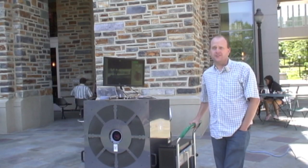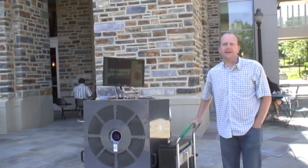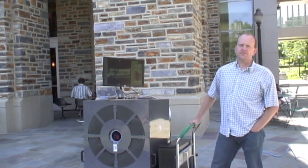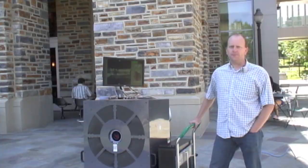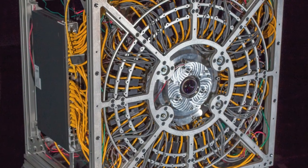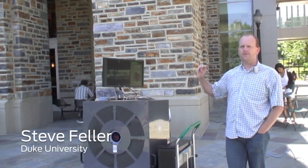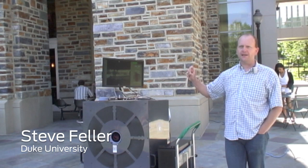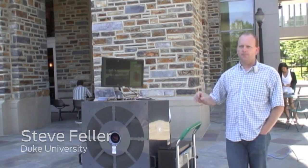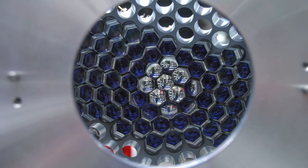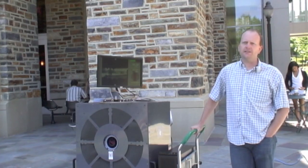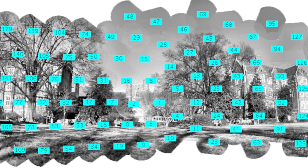I'm Steve Feller, we're at Duke University. I'm an associate in research in the electrical engineering department. Essentially what we have is a system with 98 individual focal planes — 14 megapixel cameras each. By putting them together and looking at their overlap, we're able to generate gigapixel scale images. It's a real-time gigapan or panoramic stitching system.